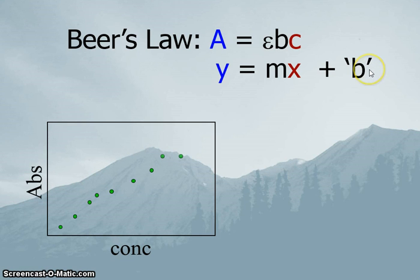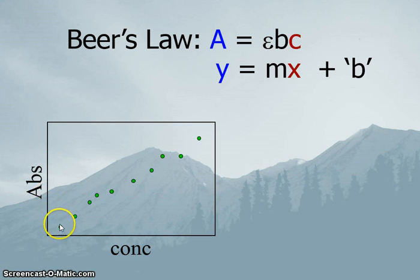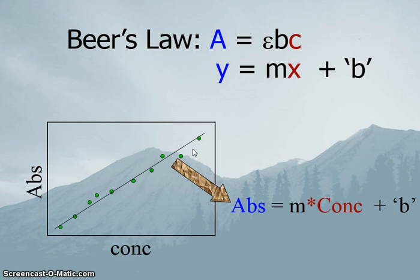We are going to make a series of solutions of known concentration at various different concentrations. We will calculate what each concentration is, then have our spectrometer give us the absorbance, giving us a nice set of data points. From those, we can get our equation that mathematically relates absorbance versus concentration.